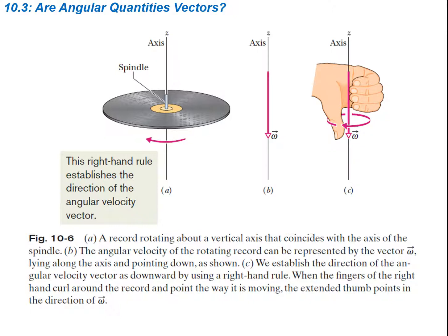Consider a record rotating about a vertical axis that coincides with the axis of the spindle. In this first image, you can see a record spinning around the center axis in a clockwise direction. We can use the right-hand rule to figure out the direction of the angular velocity, shown on the z-axis. You take your right hand and curl your fingers around the axis — the direction of your thumb shows the direction of angular velocity omega. In this case, curling our right hand around the axis, our thumb points in the downward direction, which is the negative z direction, or negative k-hat direction.